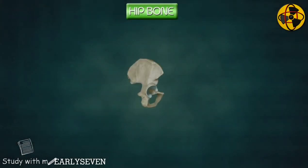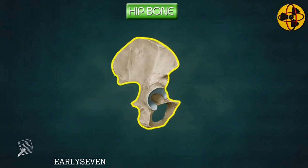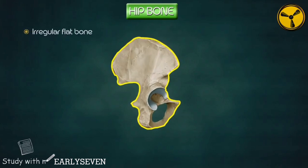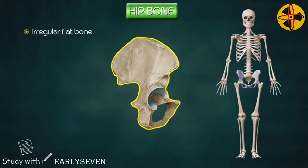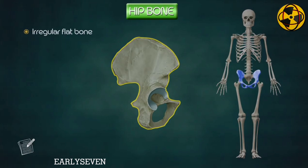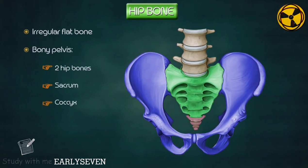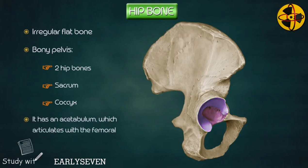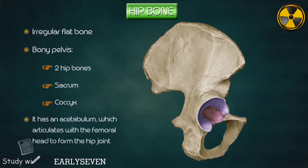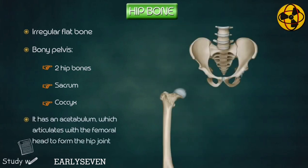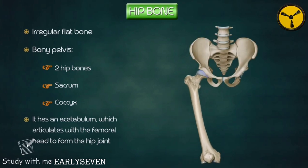Hip bone. The hip bone is a large irregular flat bone which is situated in the pelvic region. Two hip bones along with the sacrum and coccyx form the bony pelvis. It presents a cavity in its lateral side known as the acetabulum, which articulates with the head of the femur to form the hip joint.